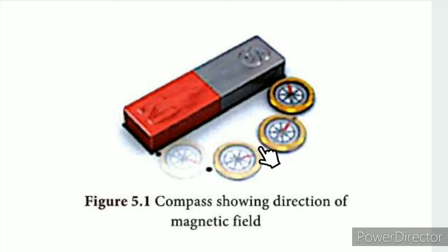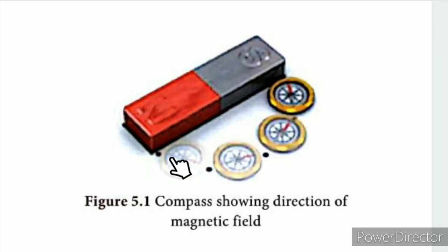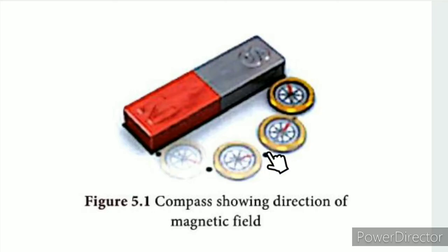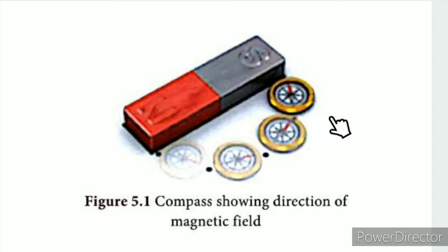This activity was covered in 8th standard. You can go to the lab and try it. Here is a bar magnet — this is the north pole and this is the south pole. Using a compass at different points, we can map out the magnetic field. The north pole is here, the south pole is here, and the dotted lines represent the magnetic field lines. You can see this activity in the ICT corner.